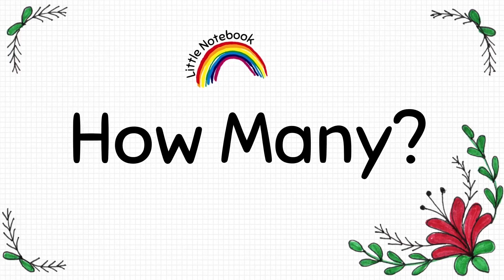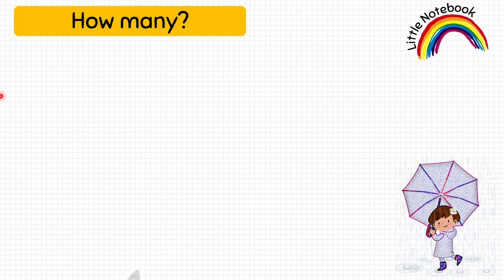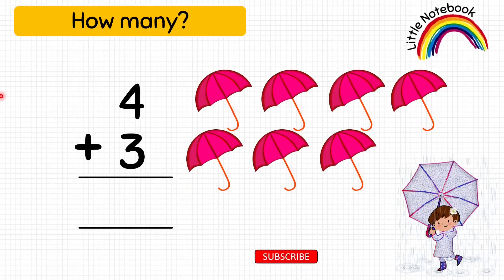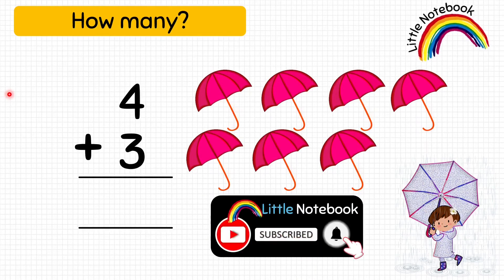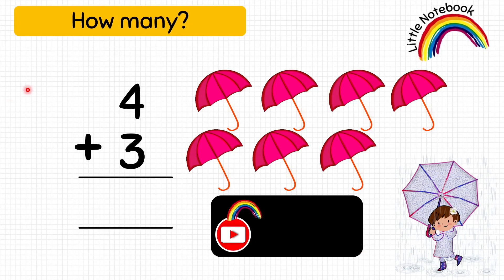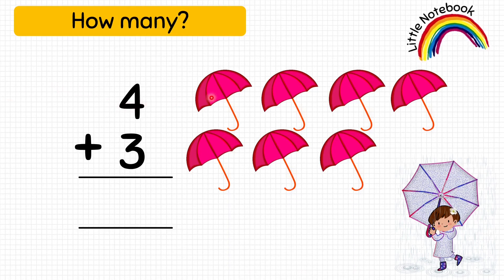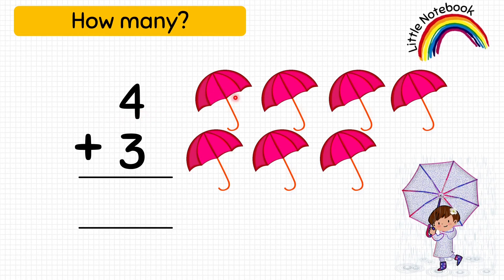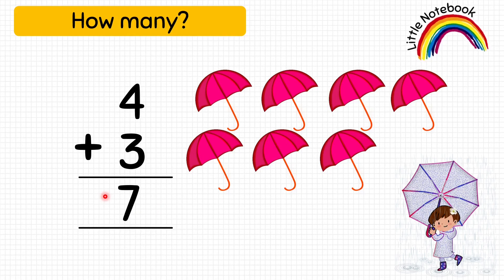Our next worksheet is How Many. Here we will do vertical addition with pictures. For example, four plus three — the four represents four umbrellas and the three represents three umbrellas. To add these two numbers, count all the umbrellas: one, two, three, four, five, six, seven — write seven. So four plus three equals seven.